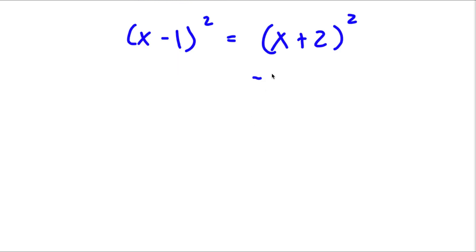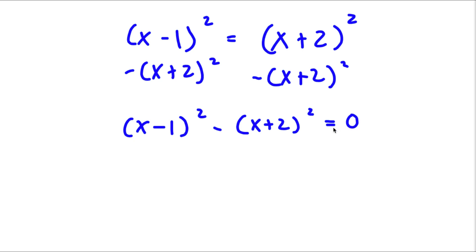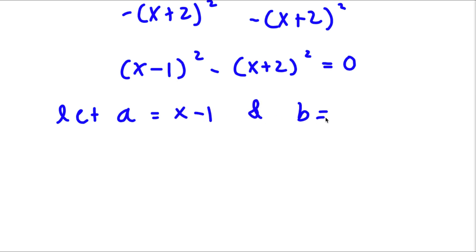Alright, so I'm first going to start by subtracting x plus 2 squared on both sides. So now I have x minus 1 squared minus x plus 2 squared is equal to zero. I'm going to let a equal x minus 1 and b equal x plus 2. So now if I substitute in the values of a and b, I get a squared minus b squared is equal to zero.